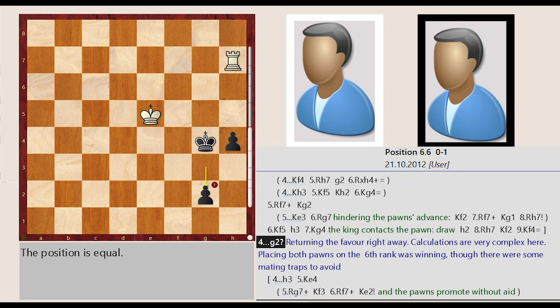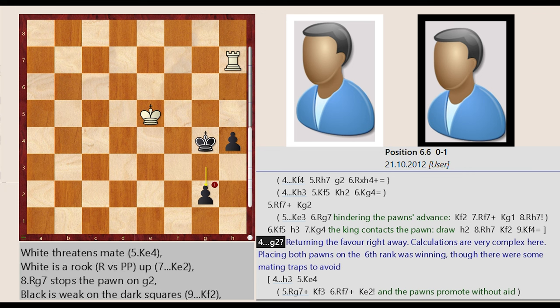G3 g2. Returning the favor right away. Calculations are very complex here. Placing both pawns on the 6th rank was winning, though there were some mating traps to avoid.